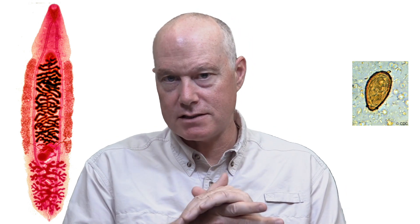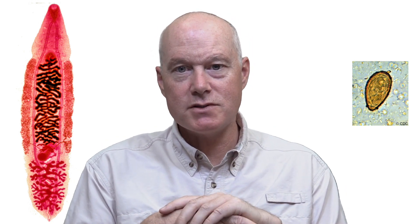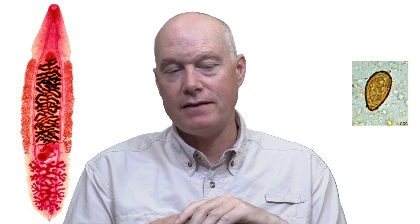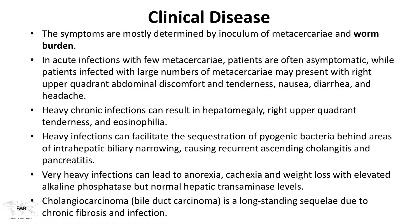The symptoms are mostly determined by the inoculum of the metacercaria and consequently the worm burden. In acute infections with only a few metacercaria, patients are often without symptoms. Patients infected with large numbers can present with right upper quadrant abdominal discomfort, nausea, diarrhea, and headache. With heavy chronic infections, you can get enlargement of the liver — hepatomegaly — chronic tenderness in that area, and an increase in the number of eosinophils, so eosinophilia.